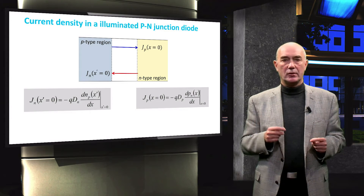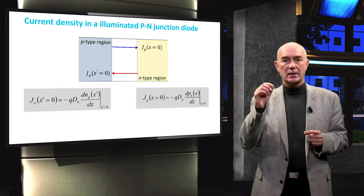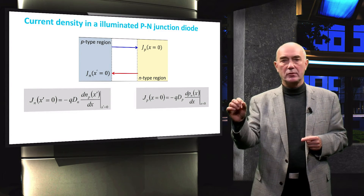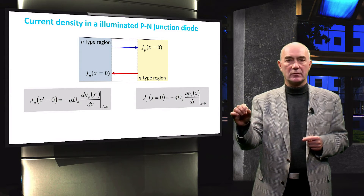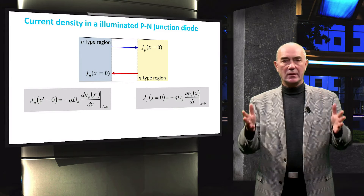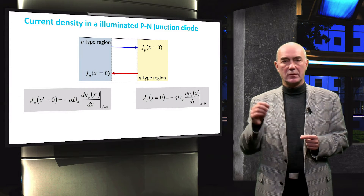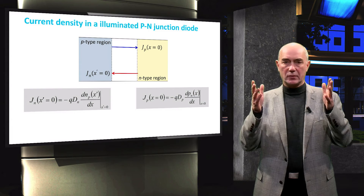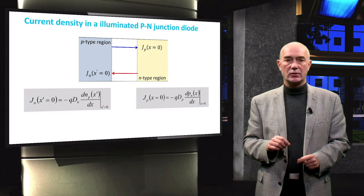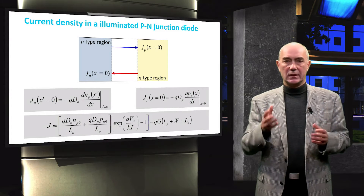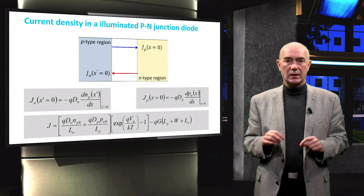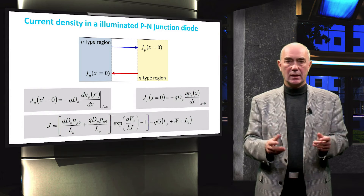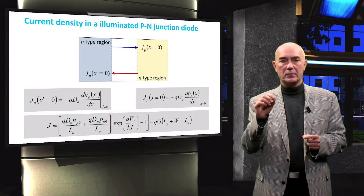The illuminated JV curve can be derived in a similar way as the dark JV curve. Using Fick's first law and substituting the minority carrier concentration into the equation, we find the current driven by electrons and holes respectively. To find the net current density J, we also need to include the contribution of photocurrent density from the depletion region. Assuming that current is constant and continuous in a P-N junction, the total current density is the sum of the hole and electron current densities plus the photocurrent density contributed from the depletion region.